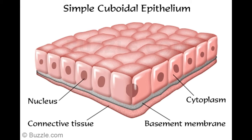Functions: Simple cuboidal epithelium is located in ducts and tubes of glands that perform secretion, absorption, or both. Examples of secretion include the thyroid gland, which secretes the thyroid hormone directly into the bloodstream — called an endocrine gland. Secretion is also performed by the ducts of the sweat and salivary glands, which release their fluids into ducts — called an exocrine gland. The tubules found in the kidneys use the simple cuboidal epithelium to perform both absorption and secretion of substances.